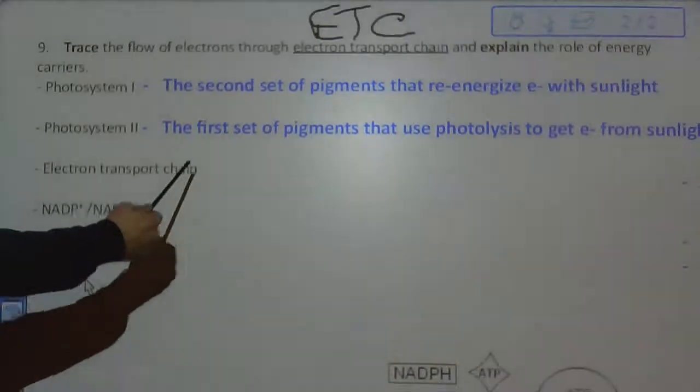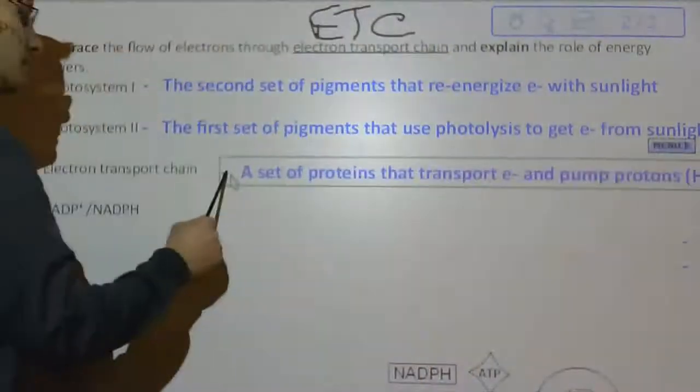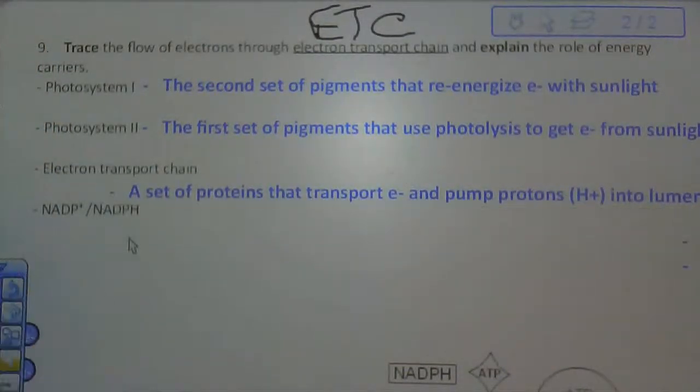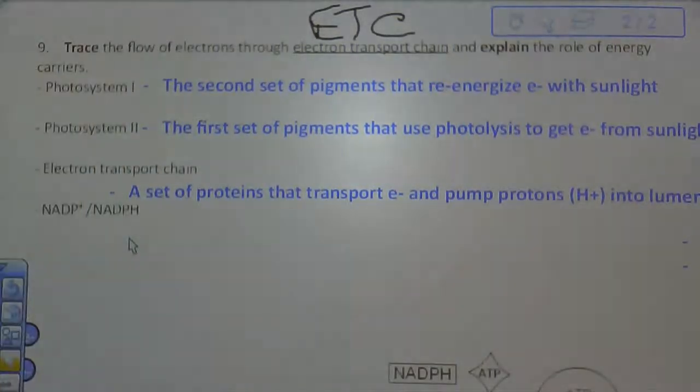Next up is the electron transport chain, which is simply abbreviated ETC. There's a definition for ETC, a set of proteins that transport electrons and pump protons, hydrogen ions H+, into the lumen. A set of proteins that transport electrons and pump protons into the lumen. We'll see what that means in just a little bit, or how that works.